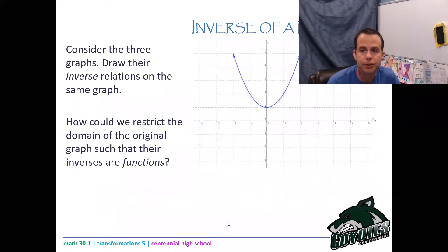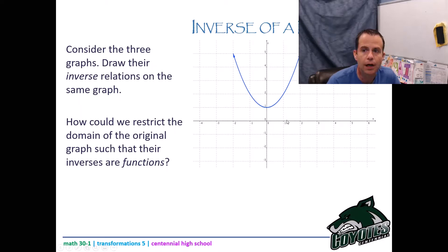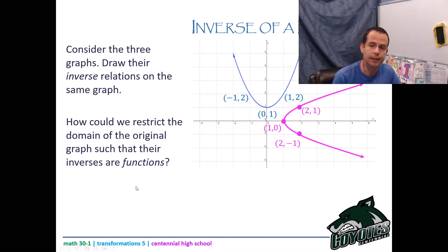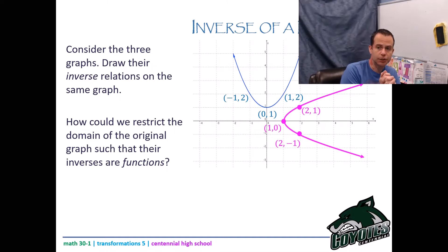For the next graph, find some friendly points. The point 0, 1 becomes 1, 0. The point 1, 2 becomes 2, 1. The point negative 1, 2 becomes 2, negative 1. When I plot those and connect them, I get the inverse relation graph. Your inverse relation should look like that pink graph.